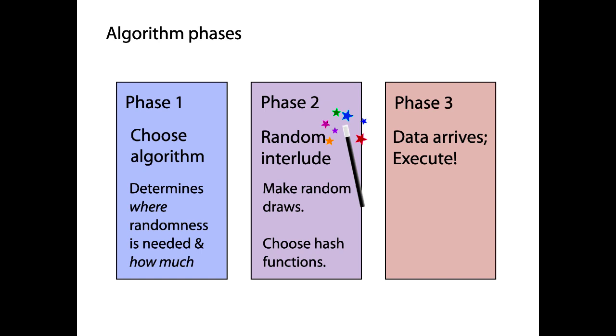And then phase three is where the action really happens. This is when the data arrives, and we can execute our strategy. And we use, of course, the hash functions that we just chose in phase two. The key is that the randomness is isolated and gathered here in just the one phase. It happens in phase two. That's where we do our random draws.